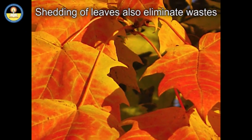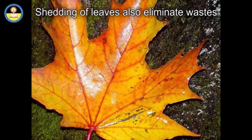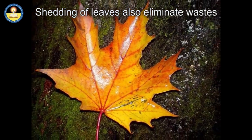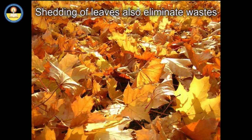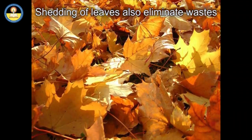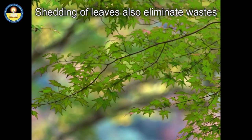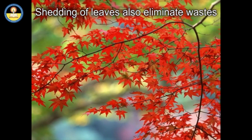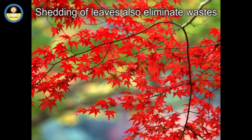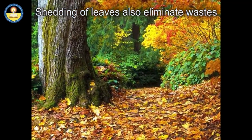Plants also eliminate waste by shedding leaves. Over time, there is an accumulation of waste in the vacuoles of aging leaf cells. These leaves eventually die and fall off, removing the metabolic waste accumulated in the vacuoles. In some areas during autumn, the color of leaves changes to a bright shade due to the storage of waste pigment in the leaves. Soon these leaves fall off and the plants get rid of certain metabolic waste.